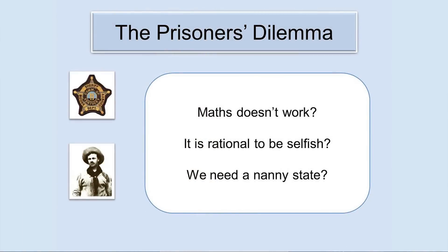So what does the Prisoner's Dilemma tell us? Perhaps the math doesn't work, but it might also appear that, left to themselves, people will not do what is necessary for the common good because it is logical to be selfish, and possible benefits will be lost. Perhaps we need a nanny state to dictate what we must do in order to ensure the best outcomes for everyone — but that's not a very attractive prospect.